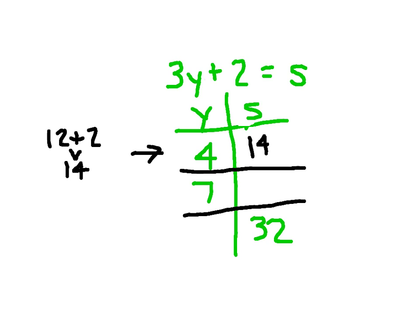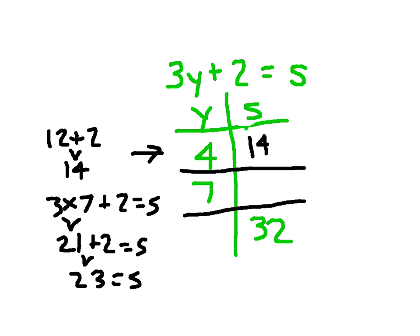For that next one there, it's saying y equals 7. 3 times 7 plus 2 equaling s. 3 times 7 is 21 plus 2 is 23. So 23 equals s. That's what this stands for. We were solving for s.